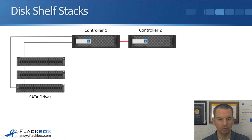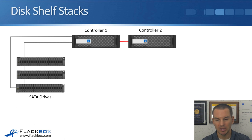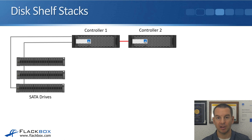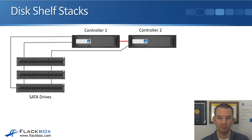In our example, controller one is connected to the stack of SATA drives. Since it's high availability, if controller one fails, we want controller two to be able to take over. So controller two also needs to be connected to the stack. From a SAS port on the back of controller two, we do the same thing — connect to the top shelf in the stack and then daisy chain SAS cables between the shelves in the stack.